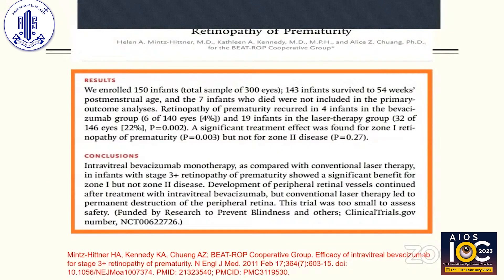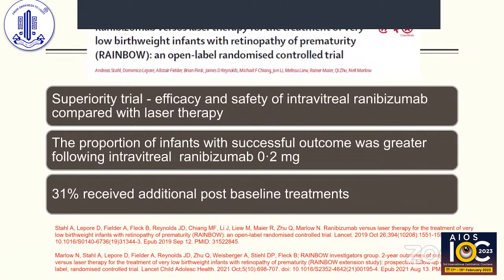In 2011, the BEAT-ROP study showed that monotherapy with intravitreal bevacizumab had better outcomes in Stage 3 plus disease in Zone 1, but not in Zone 2. Similarly, the Rainbow trial and Rainbow extended trial showed ranibizumab monotherapy was superior to laser in treating ROP babies. However, 31 percent of babies receiving ranibizumab required additional post-baseline treatment to achieve a favorable outcome, meaning these babies are likely to experience progression and recurrence, requiring good follow-up and further treatment.